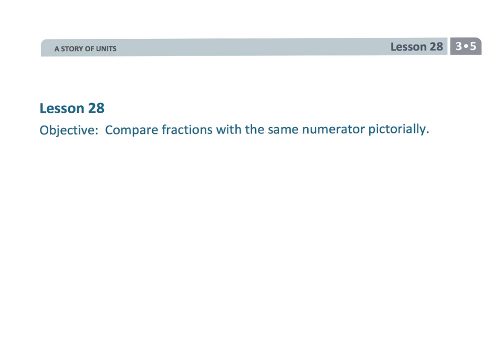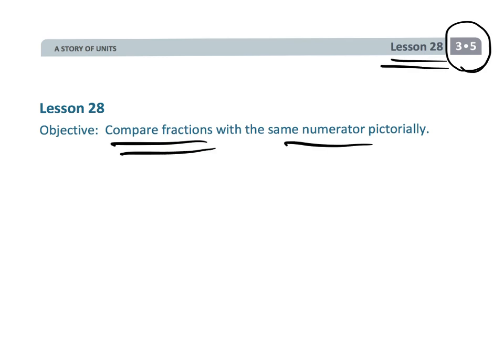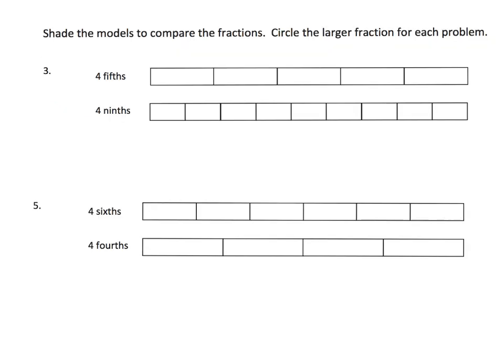This is Grade 3 Module 5 Lesson 28, and we're going to be comparing fractions with the same numerator — identifying which one is greater and which one is smaller. We're going to do it pictorially so we can help students develop a logic about fractions and an understanding of fractions. We're not going to teach an algorithm right now; we're just going to do everything through drawing pictures.